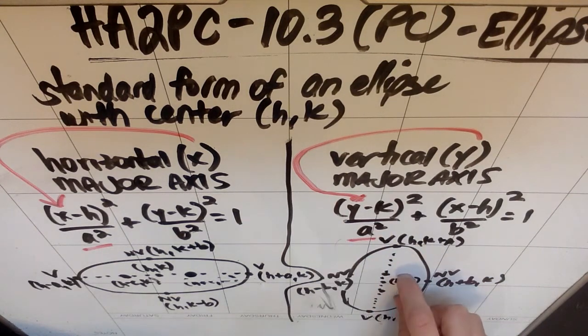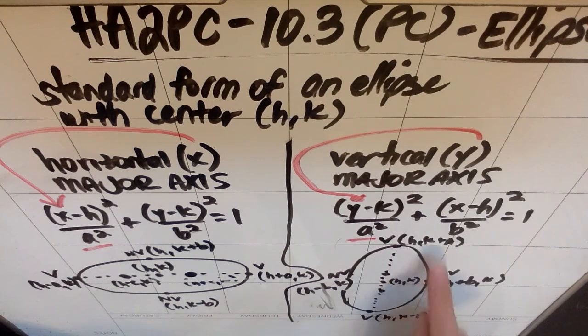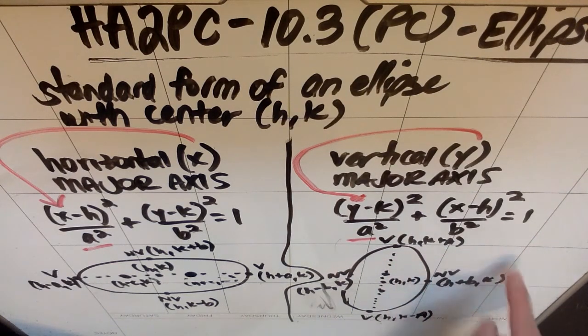The same rules apply for the vertical major axis, except obviously a is now in the vertical direction. So whatever your y coordinate is, which is k, you would move up a units, so my vertex up here is h comma k plus a because k was the y coordinate, so to move up I move k plus a.